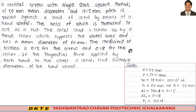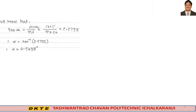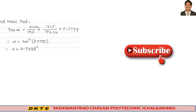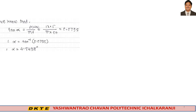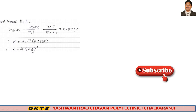Find the suitable diameter of the hand wheel. First, find the helix angle alpha in this problem. We know that tan alpha equals lead divided by pi times mean diameter d. Putting the values given in the problem, we calculate tan alpha, and from this we get alpha equals tan inverse of that value, which gives alpha equal to 4.5498 degrees.